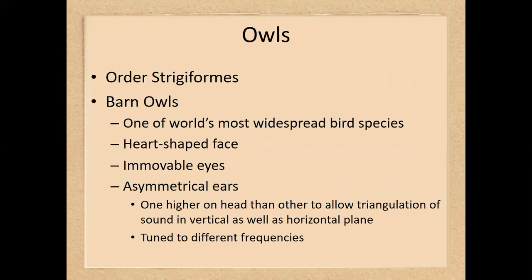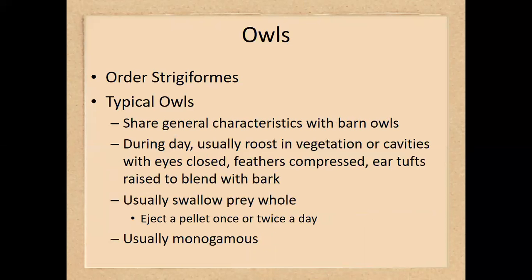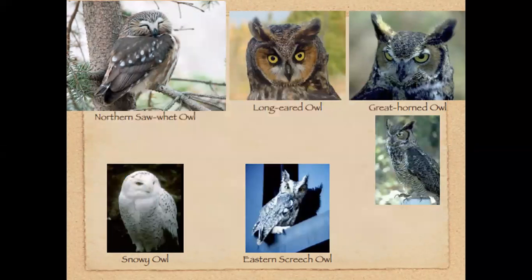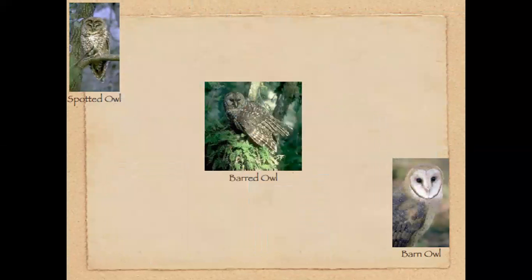This brings us to the owls. Barn owls are very different from the rest of the owls — they are one of the world's most widespread bird species. They have a heart-shaped face not seen in other owls, their eyes are immovable, and their ears are asymmetrical. Typical owls have ear tufts as opposed to that heart-shaped face. As learned in lab, owls produce owl pellets from the remaining parts of their prey. A wide variety of owls is shown here, and you can see the barn owl in comparison to the others.